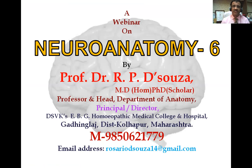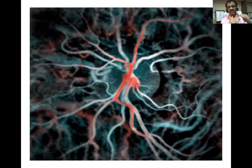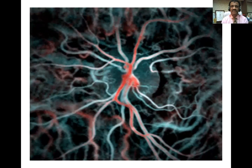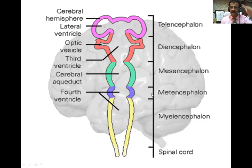I welcome you all for the last episode on neuroanatomy. I hope you remember the forebrain, midbrain, and hindbrain and the six major parts of the brain, because without that we cannot proceed further. The forebrain consists of telencephalon and diencephalon, which together make the prosencephalon. Mesencephalon means midbrain. Rhombencephalon means hindbrain, which includes the pons, medulla oblongata, and cerebellum. Pons and cerebellum together are called metencephalon, and medulla oblongata is called myelencephalon.